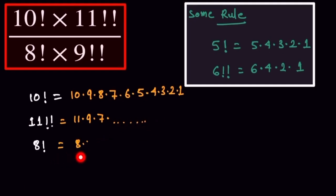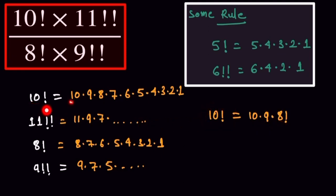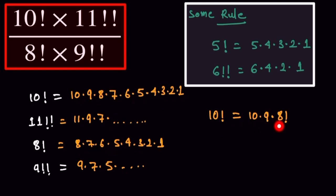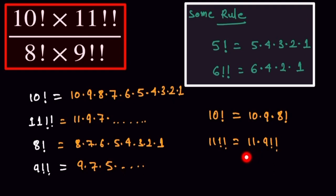8 single factorial has a difference of 1. And 9 double factorial is written as 9 into 7 into 5 till 1, with a difference of 2. Now, 11 double factorial can be written as 11 into 9 double factorial, since going from 11 down with a difference of 2 gives us 11 into 9!!. So our conclusion: 11!! = 11 × 9!!.